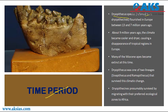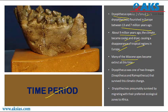Dryopithecus flourished in Europe between 13 to 7 million years ago. About 9 million years ago the climate became cooler and drier, causing a disappearance of tropical regions in Europe. Many Miocene apes became extinct at this time. Dryopithecus was one of two lineages — along with Shivapithecus and Ramapithecus — that survived this climate change.